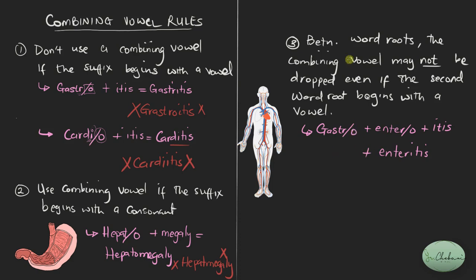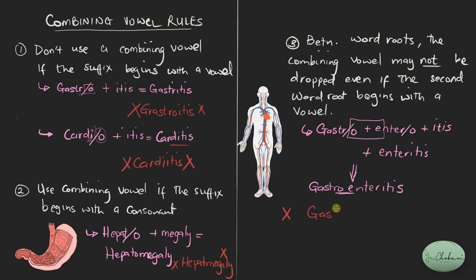However, rule three says: between two word roots, if the second word root begins with a vowel, we don't drop the combining vowel. We combine them as they are, and the final word becomes 'gastroenteritis.' We maintained both vowels — the combining vowel and the vowel belonging to the second word root. If you had decided to drop the combining vowel, the word would become 'gastr-enteritis,' which is not correct.